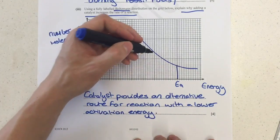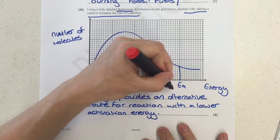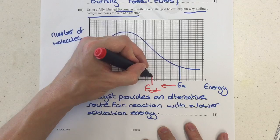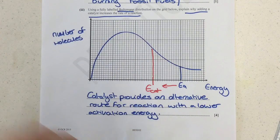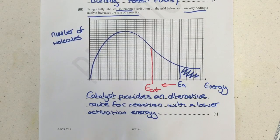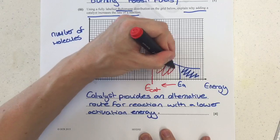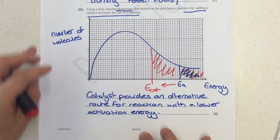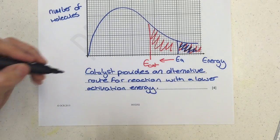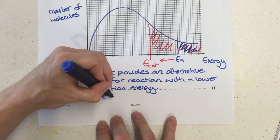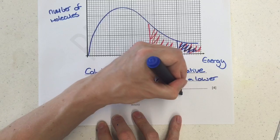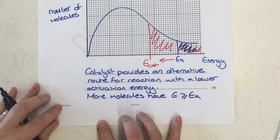So we can draw that onto the graph. There's no marks for this bit, but if you do want to draw it, the catalyst would change the activation energy to being about here. We can call it E-cat. Originally, these molecules were able to react upon collision because they had energy greater than or equal to the activation energy. Whereas now with the catalyst, we've got these and those from before. Don't forget those from before. That's the important bit. So we need to say that more molecules have energy greater than or equal to the activation energy. That covers us.